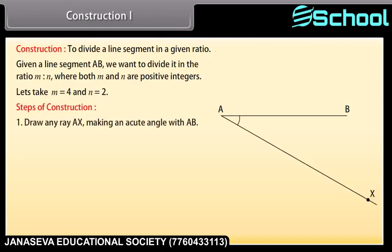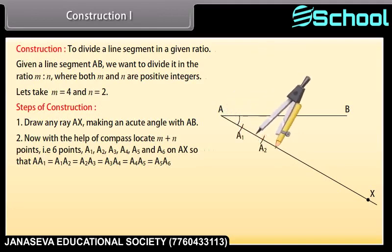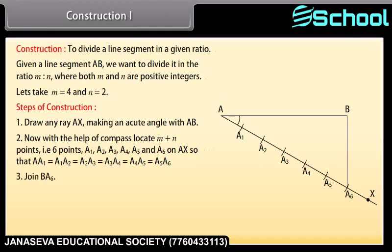Steps of Construction: Draw any ray AX making an acute angle with AB. Now with the help of a compass, locate M plus N points, that is 6 points, A1, A2, A3, A4, A5 and A6 on AX, so that AA1 equals A1A2 equals A2A3 equals A3A4 equals A4A5 equals A5A6. Join B to A6.